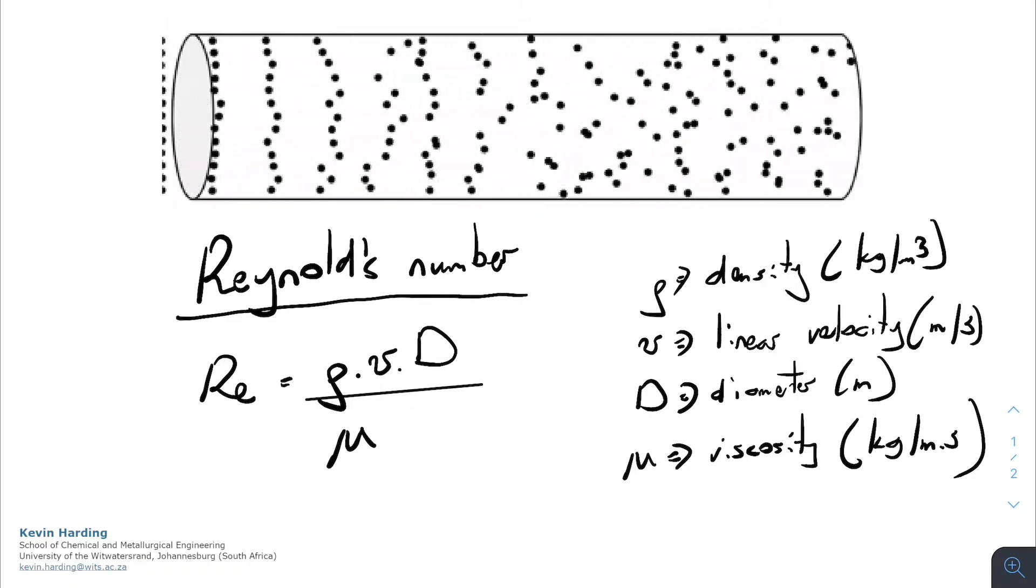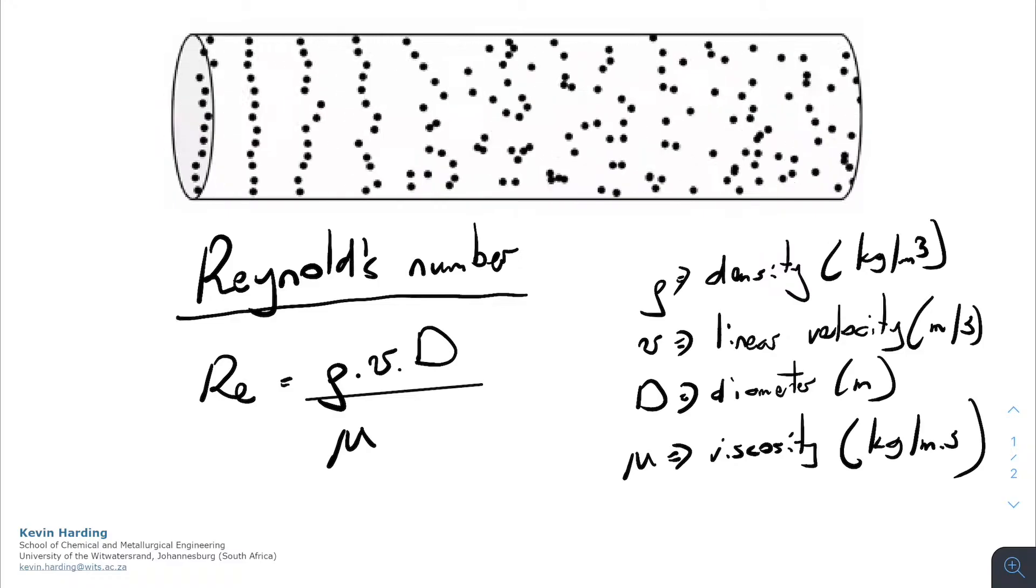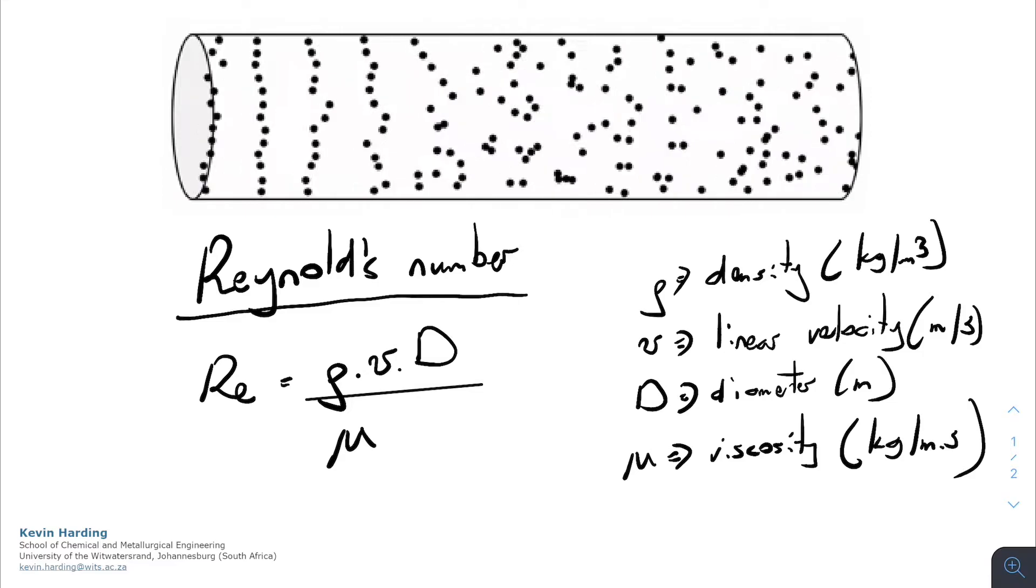So in SI units, the density is given in kilograms per cubic meters, the linear velocity in meters per second, and the diameter in meters, while the viscosity is given as kilograms per meter per second.